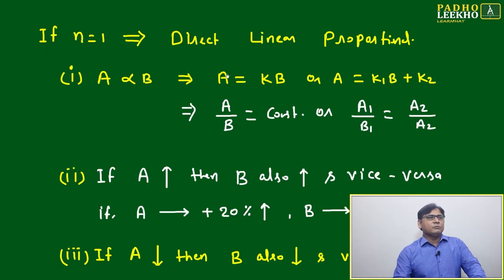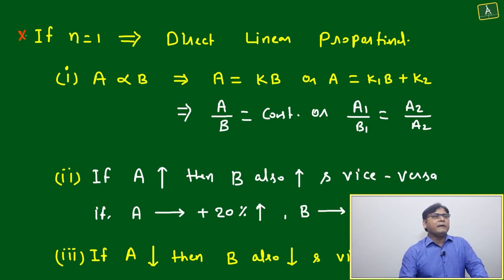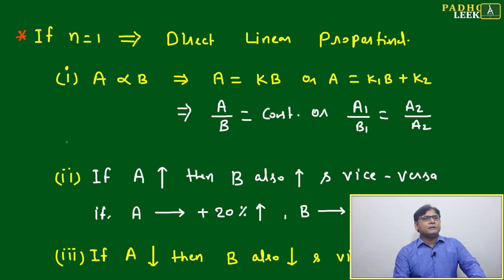We'll take one case that is our main area of interest for this chapter: if n equal to 1, then we can say it is a direct linear proportional or direct linear relationship.